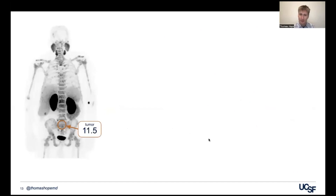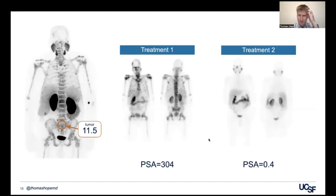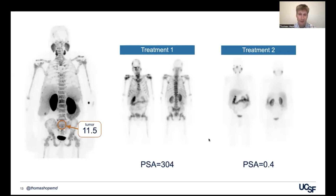That said, here's a patient with relatively low uptake — SUV max of 11 in his disease, so his SUV mean is probably five or six, one of the lower quartiles. After cycle one, his PSA was 304 at baseline, but after cycle two his disease essentially completely melted away — PSA went down to 0.4. I personally can't explain this: some patients are just more sensitive to radioactivity and we don't fully understand that sensitivity. We're trying to understand it by biopsying patients prior to treatment. You wouldn't want to withhold therapy from this patient because he benefited greatly. So often with patients with low uptake, I'll say, let's try a couple of cycles, see how you tolerate it, see how your disease responds, and then decide if we want to keep moving forward.